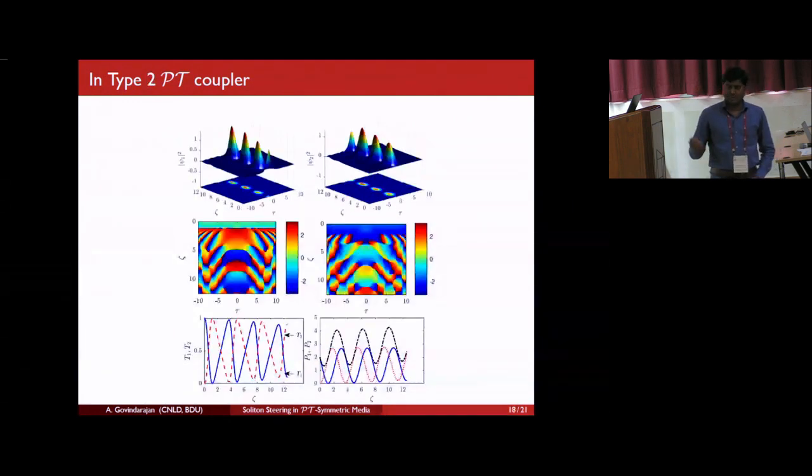We also focus on the type 2 PT-symmetric fiber couplers. It also exhibits the same energy route, but with different dynamics. You can observe that, here, along the propagation direction, the pulse gets amplified, as well as the coupling length has been decreased. That's something quite remarkable.